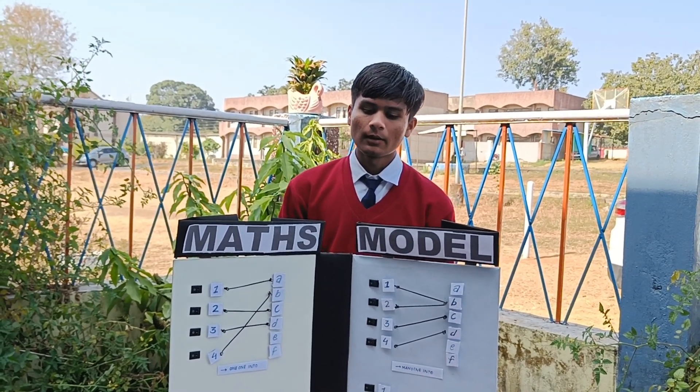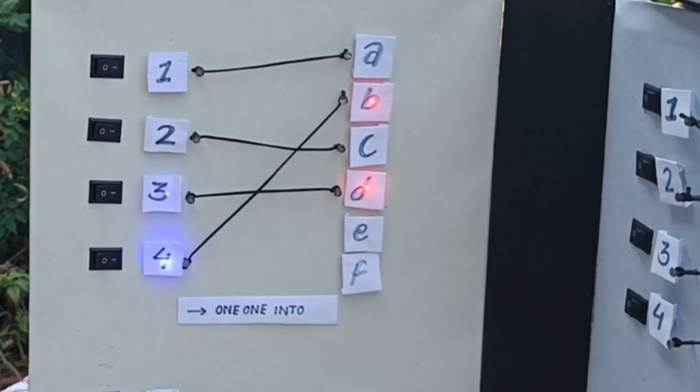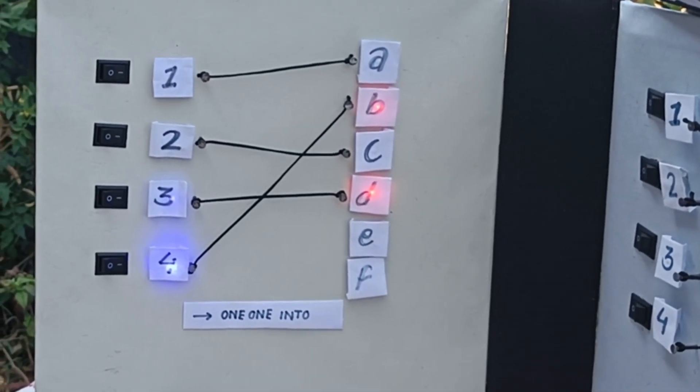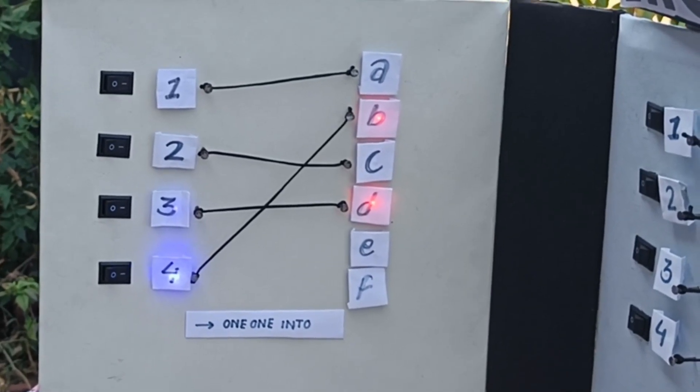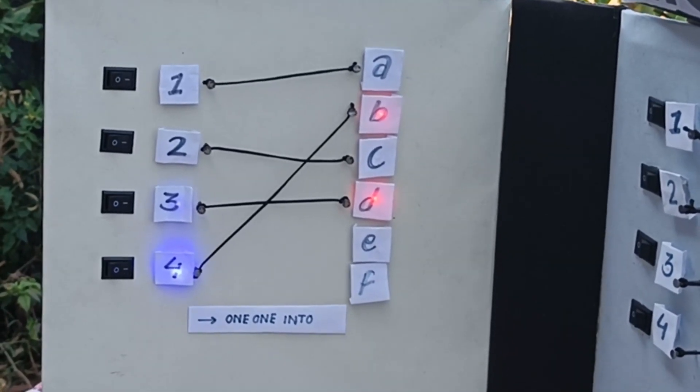Our first type is one-one into. This is one-one because all elements in set A are related to single element of set B, and into because e and f in set B doesn't have its pre-image in set A.